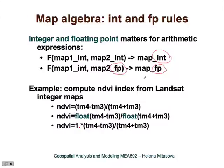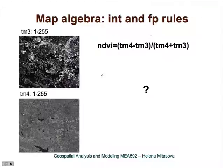A very nice example is the NDVI index, or greenness index, computed from Landsat channels 3 and 4. The equation for NDVI is the difference between the 4th and 3rd channels divided by the sum of the 4th and 3rd channels. These maps are integers, so if we treat them as integers, the difference will always be smaller than the sum.